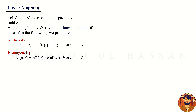The second property is homogeneity. In this property we take one scalar from the field F and one vector from the vector space V. Then T of alpha V equals alpha times T of V. So if any mapping T from one vector space to another satisfies these two properties, then we call that mapping a linear mapping.